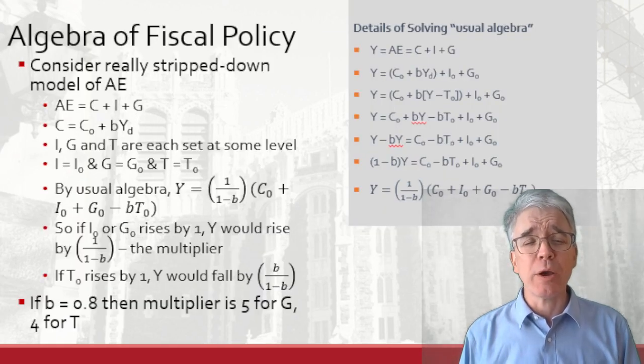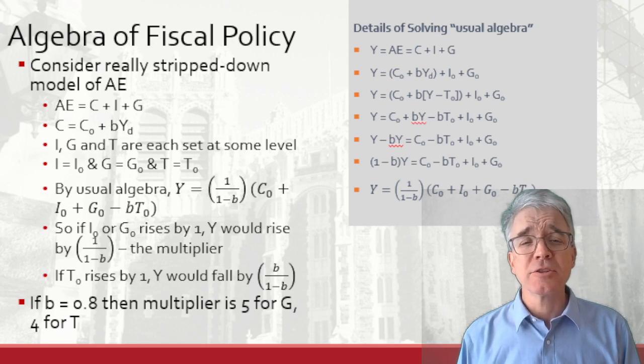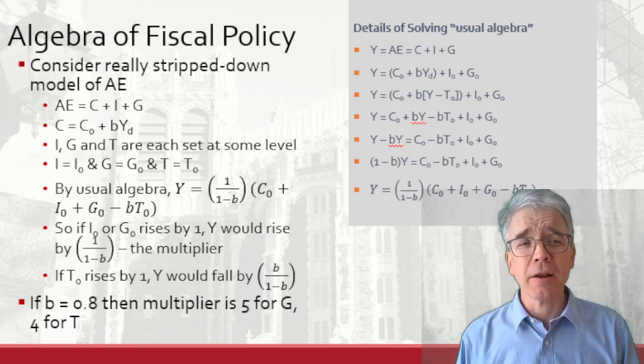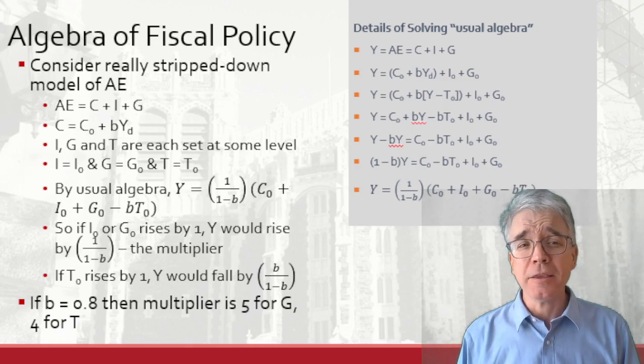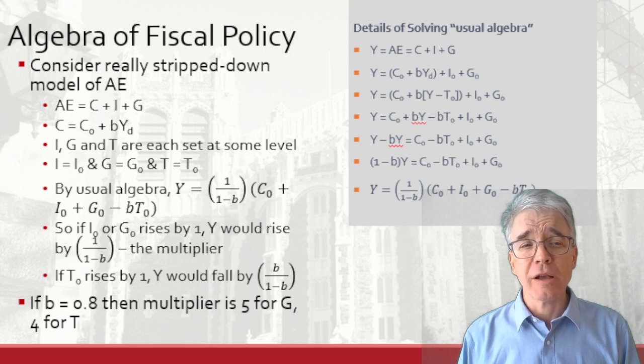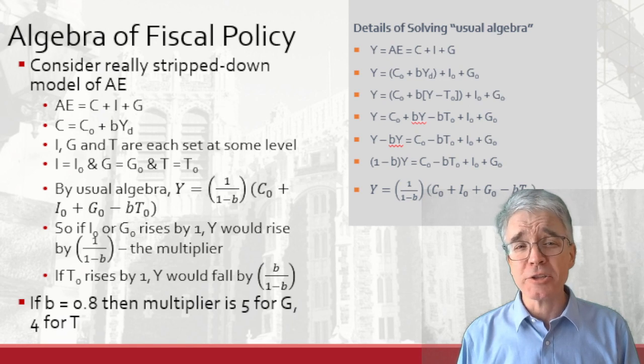We'll go through some of the equations of aggregate expenditure. Start with a really stripped down aggregate expenditure model with no foreign sector. AE equals C plus I plus G. We have our usual consumption equation, C equals C naught plus BYD, where YD is disposable income.